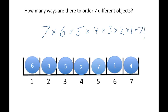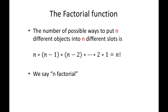To reiterate, the number of possible ways to put n different objects into n different slots is n times (n-1) times (n-2) and so on until times 1. And that is denoted n factorial.